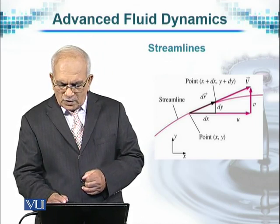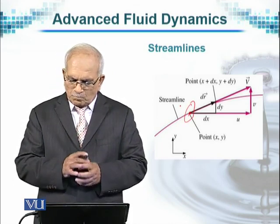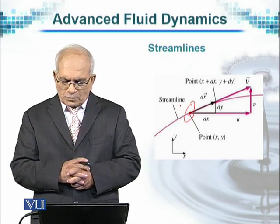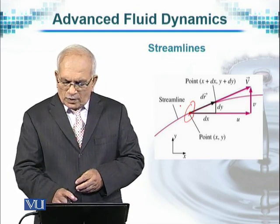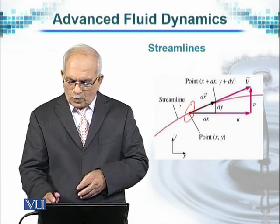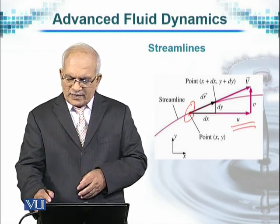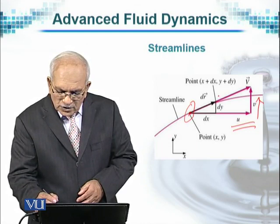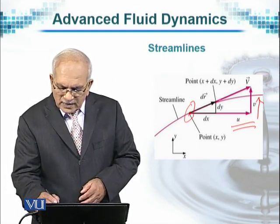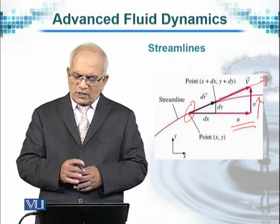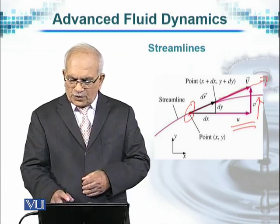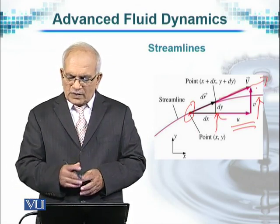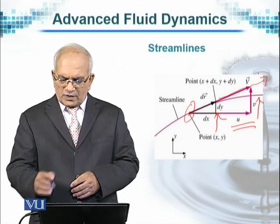If this is the point from where we start, denoted by (x, y), then in the x direction the velocity component will be u, and in the y direction the velocity component will be v. This is representing the velocity vector as a whole — u is its component in the x direction and v is the component in the y direction.